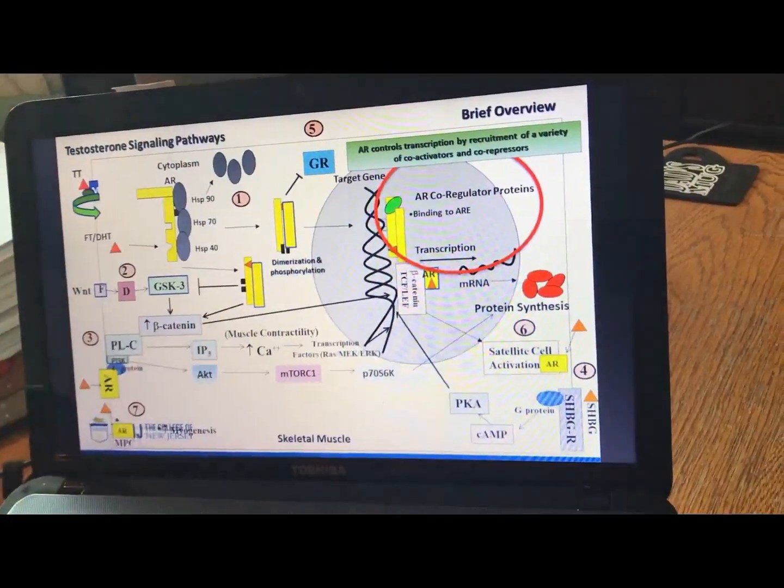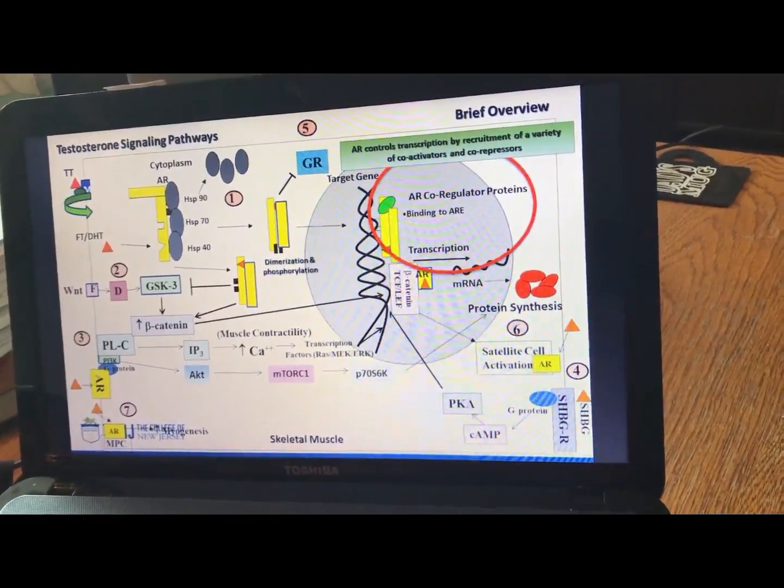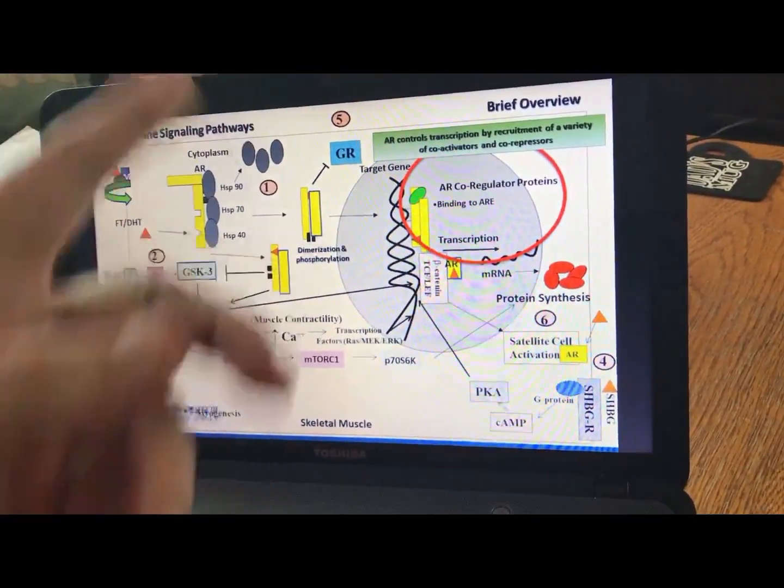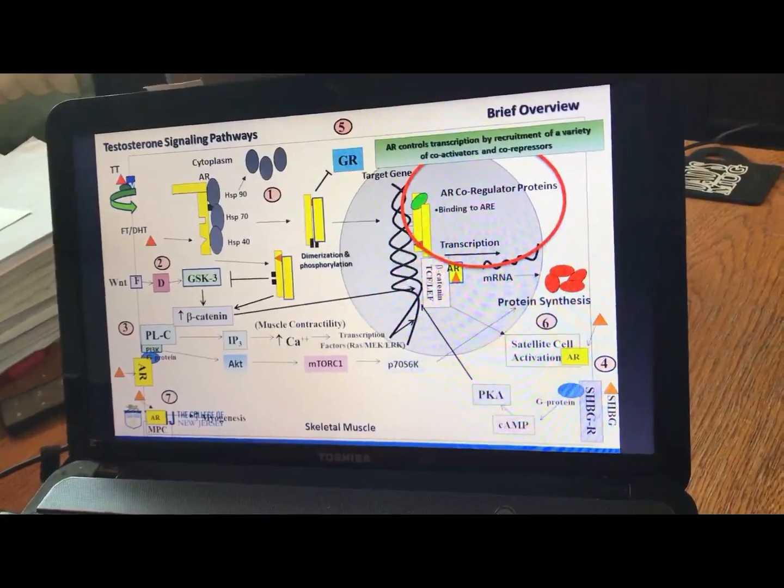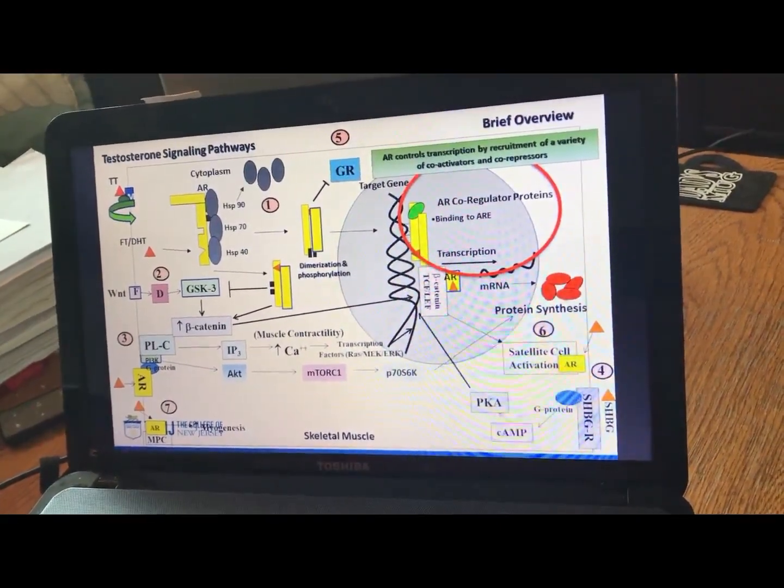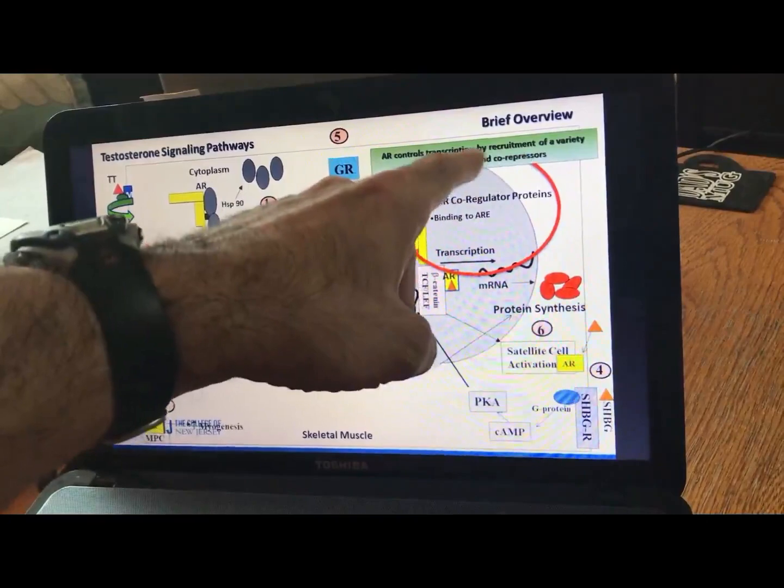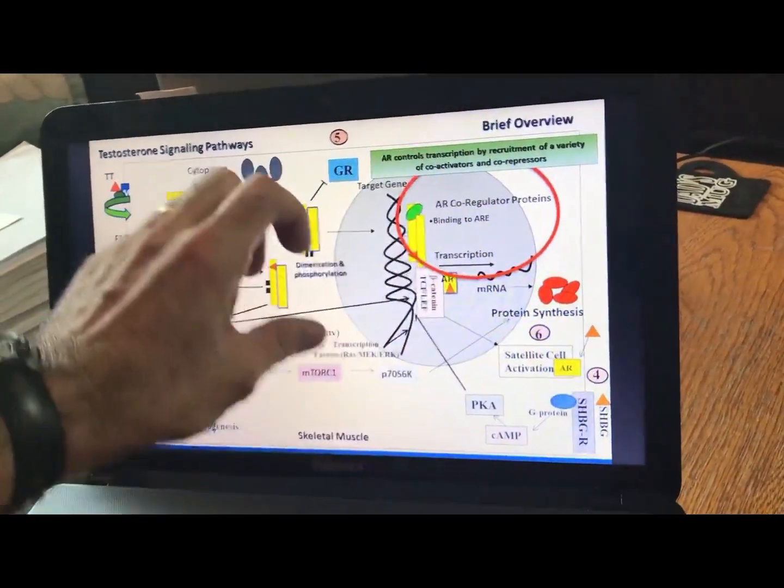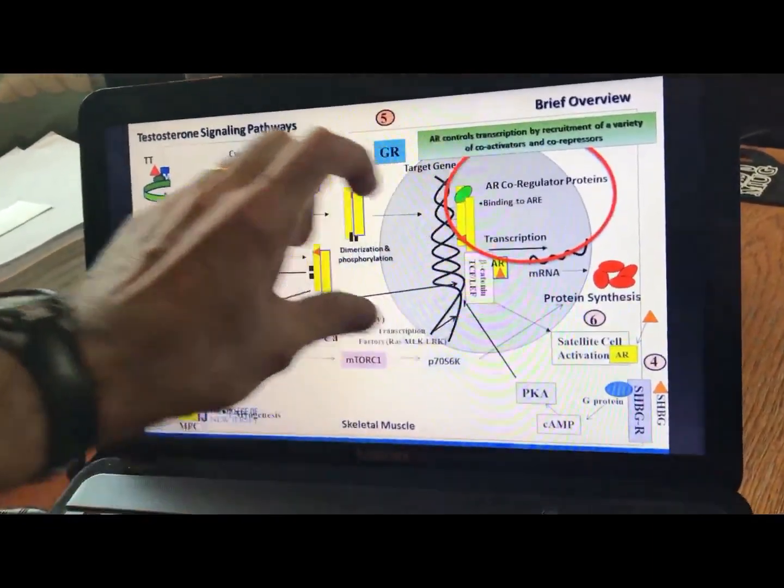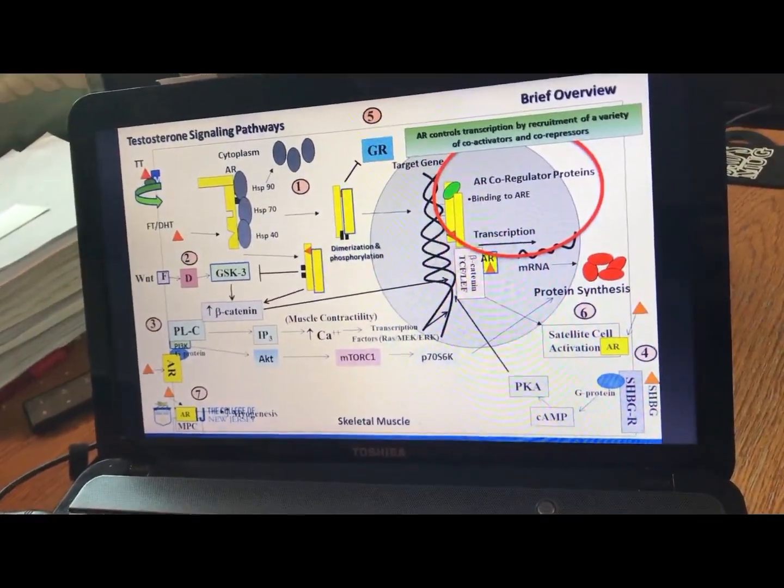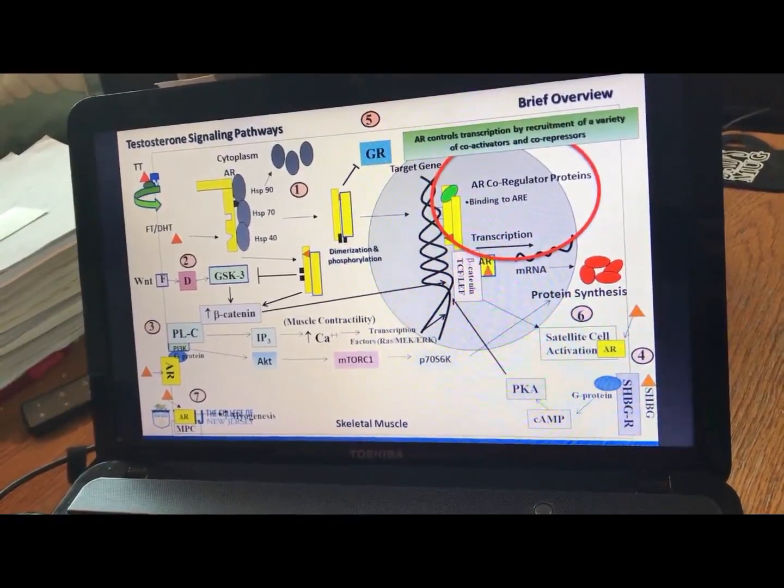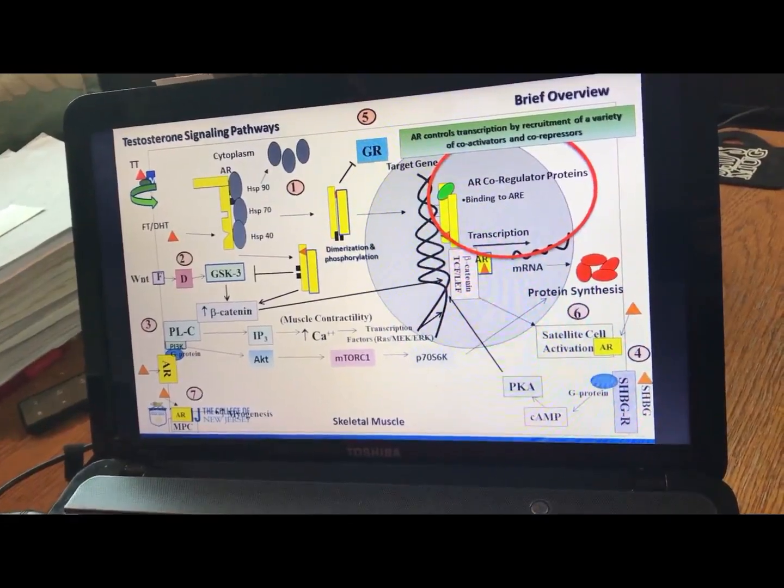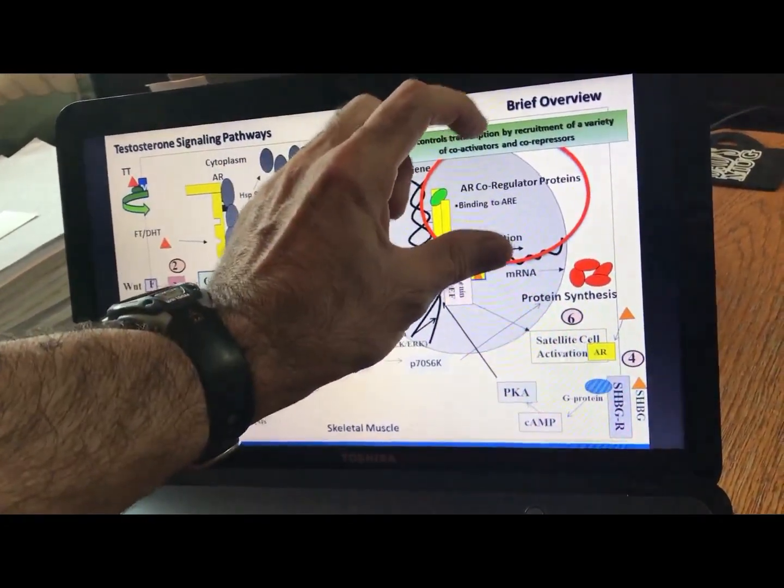One thing I mentioned before is that there are some companies using those co-regulators to target drugs, especially the co-repressor. So, if you inhibit a co-activator or stimulate a co-repressor, that reduces androgen action. And some companies are looking at that now to help as another potential treatment for men with prostate cancer. Anti-androgenic treatments are used for prostate cancer. So, that's an interesting area right there now for that.